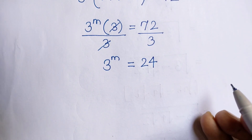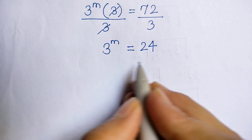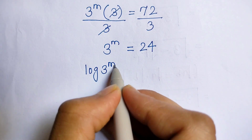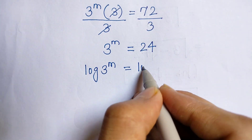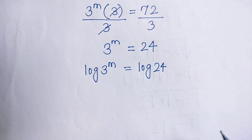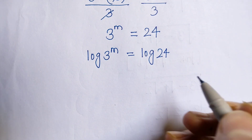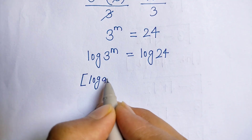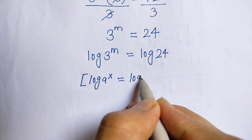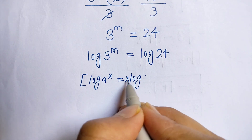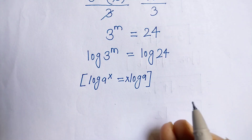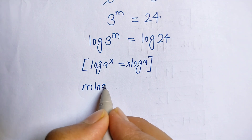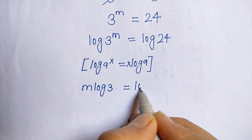Now we take log on both sides: log of 3 power m is equal to log of 24. We use the exponential rule of log — that is, log a to the power x equals x log a. Applying this rule, we get m log 3 is equal to log 24.